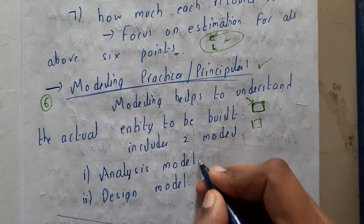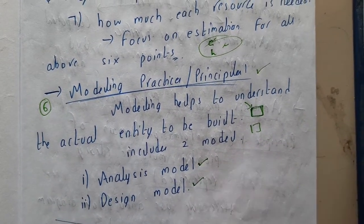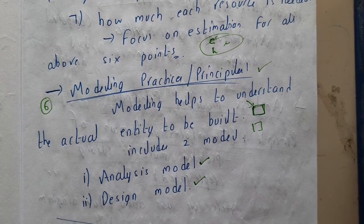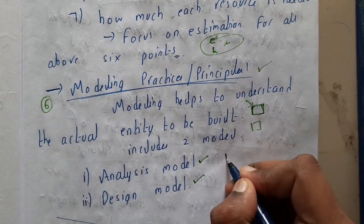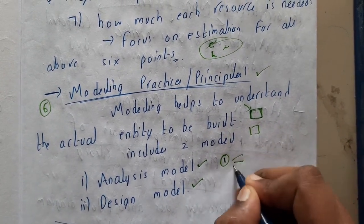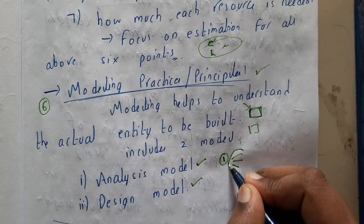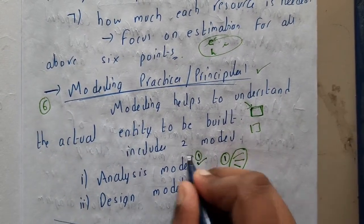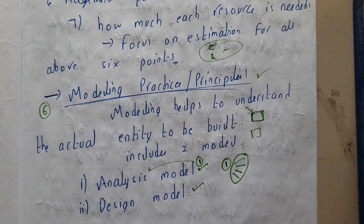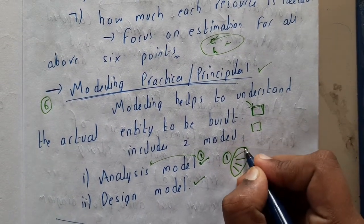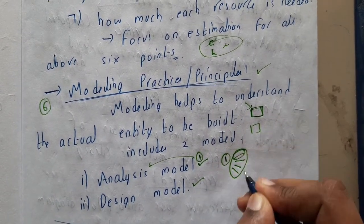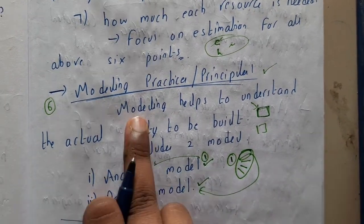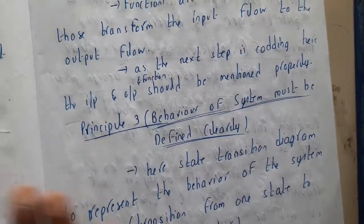Modeling includes two steps internally: one is the analysis model and one is the design model. First, you will be analyzing models. From the previous planning step, we will have multiple plans, and among all of these you will be analyzing them and selecting one appropriate plan based on multiple parameters. Then the selected plan you will be designing.